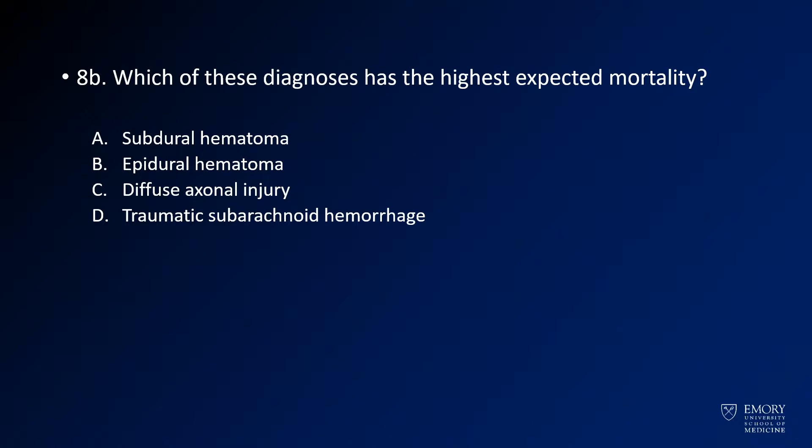These are different types of hemorrhage you might have. So is it subdural hematoma, epidural hematoma, diffuse axonal injury, or traumatic subarachnoid hemorrhage?